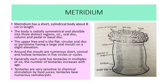Next example is Metridium. Metridium has a short cylindrical body about 8 cm in length. The body is radially symmetrical and divisible into three distinct regions: the oral disc, column, and basal disc. The upper free end is a flat circular oral disc or peristome, having a large oval mouth on a slight elevation. Around the mouth are numerous short, conical, hollow tentacles arranged in five circles or cycles. Generally each cycle has tentacles in multiples of six, and the number of tentacles increases with age. The tentacles are very sensitive to chemical stimulation by food juices and bear numerous nematocytes.